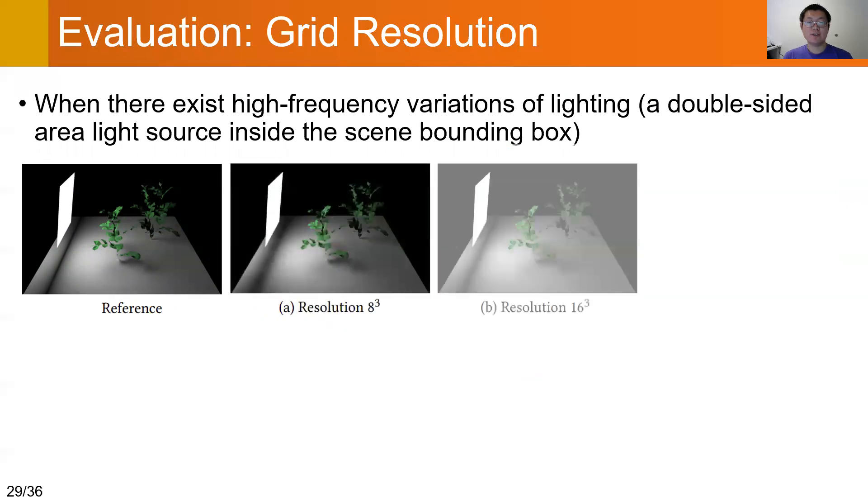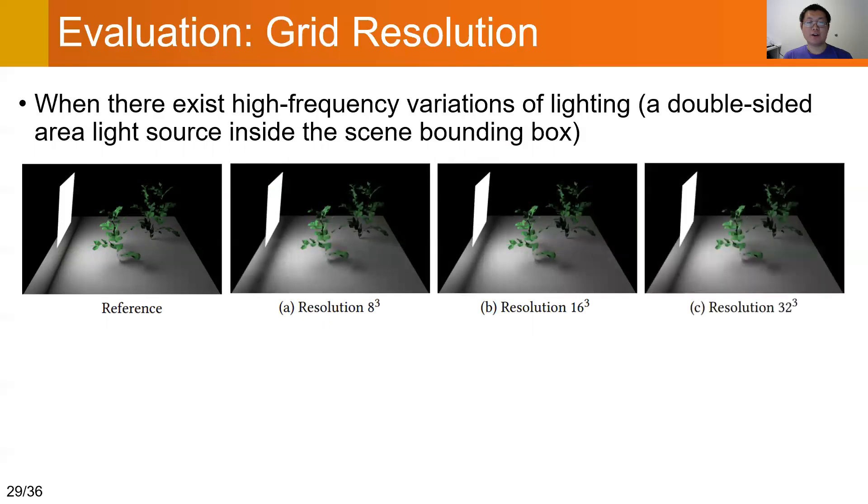The shading close to the grazing angle of the area light looks blurry when the grid resolution is low. The quality improves as we increase the grid resolution.